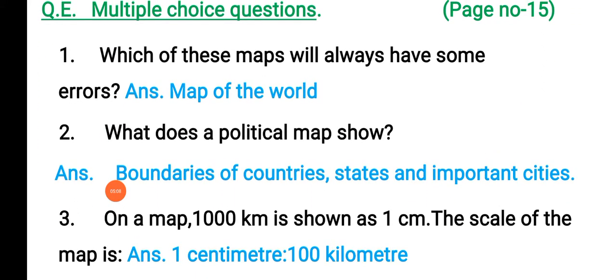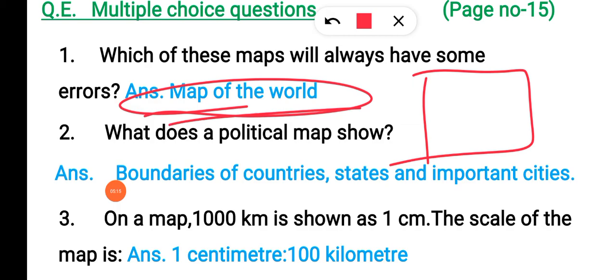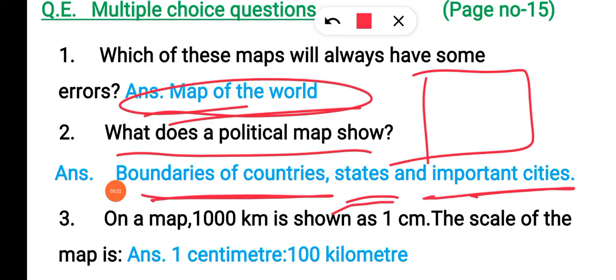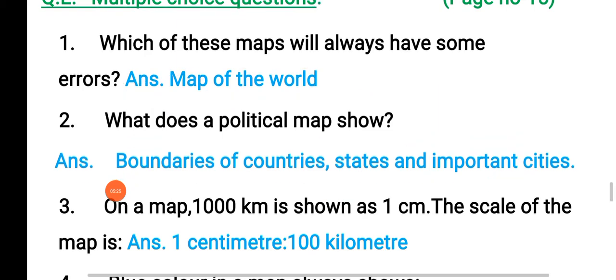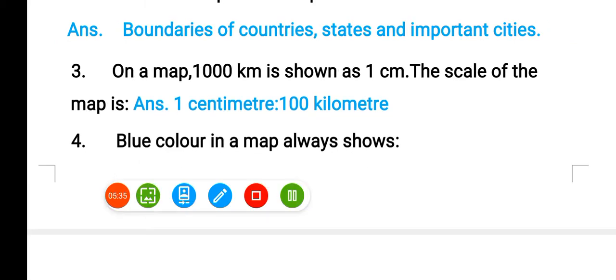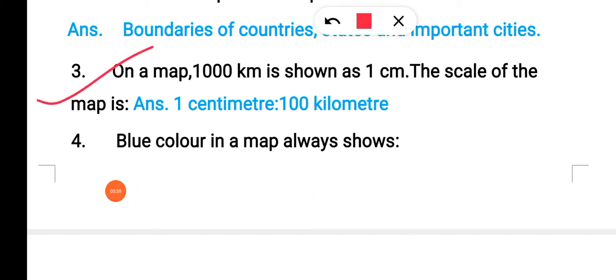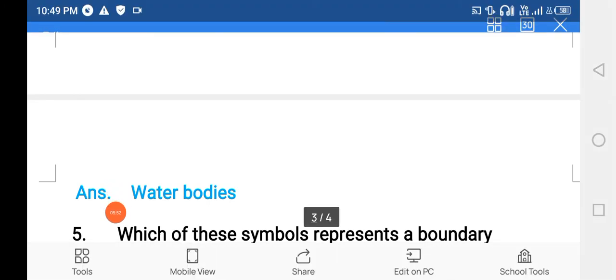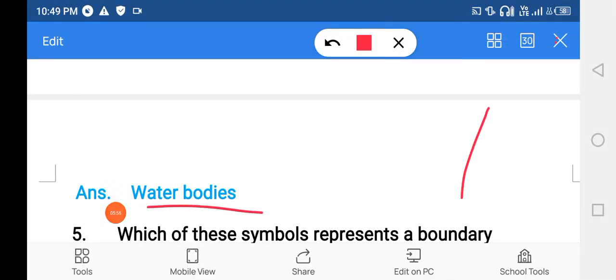Multiple choice questions. Which of these maps will have some error? World map. Political maps show boundaries of the country, state, and important cities - state boundaries, country boundaries. On a map, 1000 km is shown as 1 cm. The scale of the map is 1 centimeter to 100 kilometers. But I am not sure about question number 3, so you just go with whatever your teacher has given as the option. I am confused.